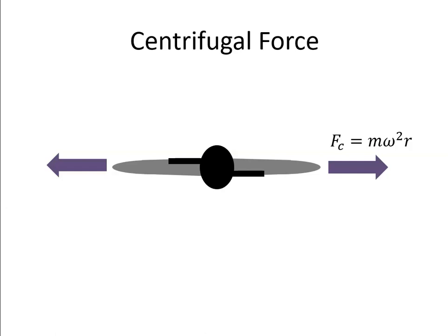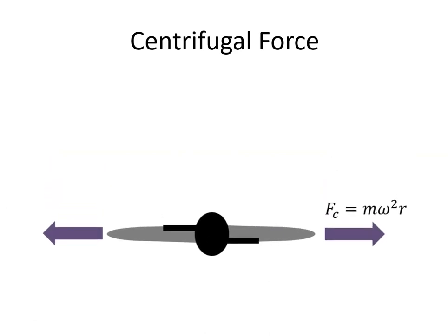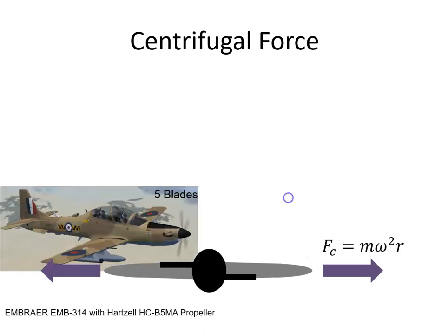Now this can be quite a significant force, primarily because of this component of the force here — ω squared. To illustrate the point, we're going to look at a particular type of propeller: the five-bladed Hartzell HC-B5MA prop.